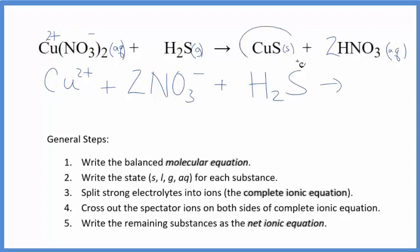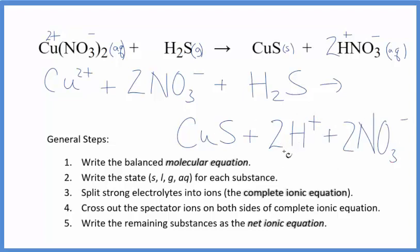For the products, CuS is a solid - we do not split that apart. For the HNO3, hydrogen is group 1, and the nitrate ion has a 1 minus charge. So we have two hydrogen ions and two nitrate ions. These are the products in our complete ionic equation.